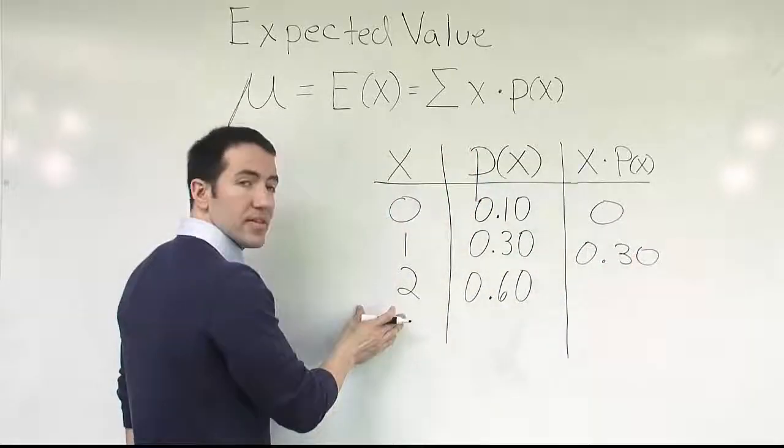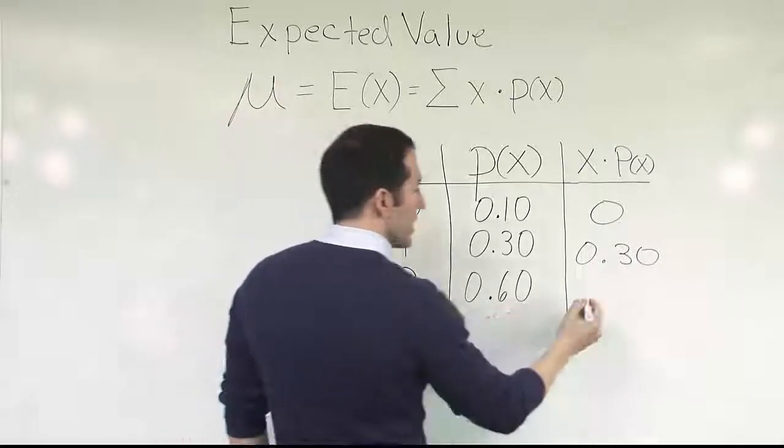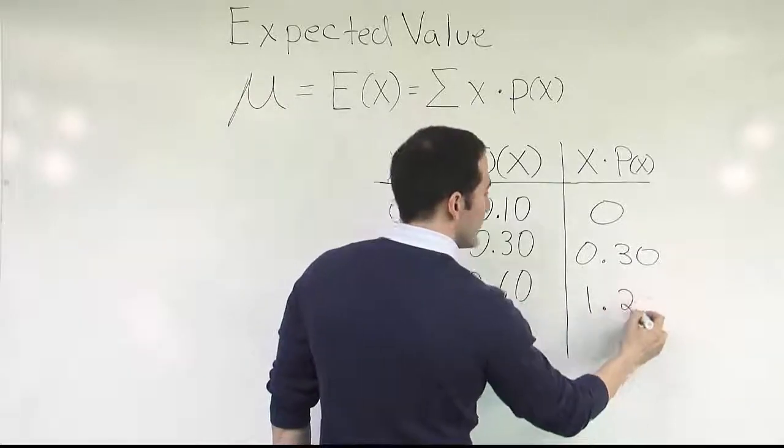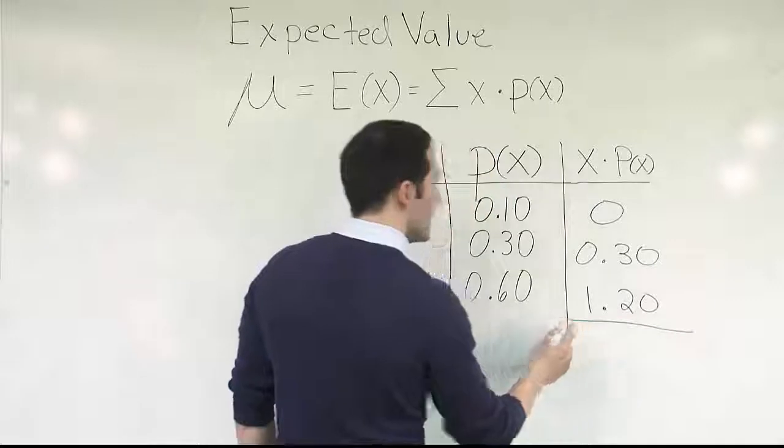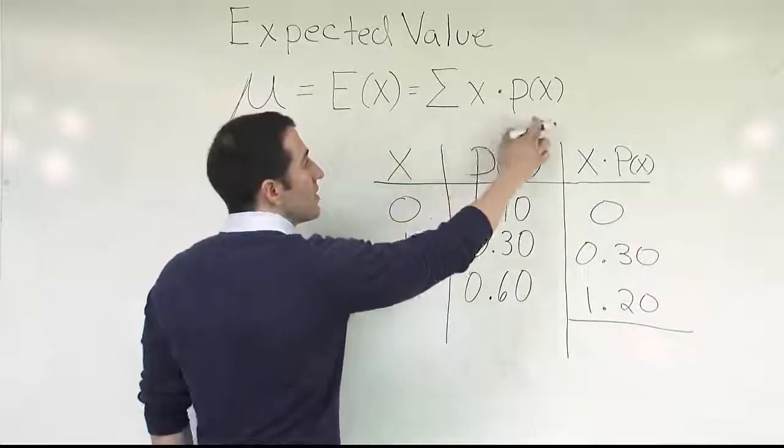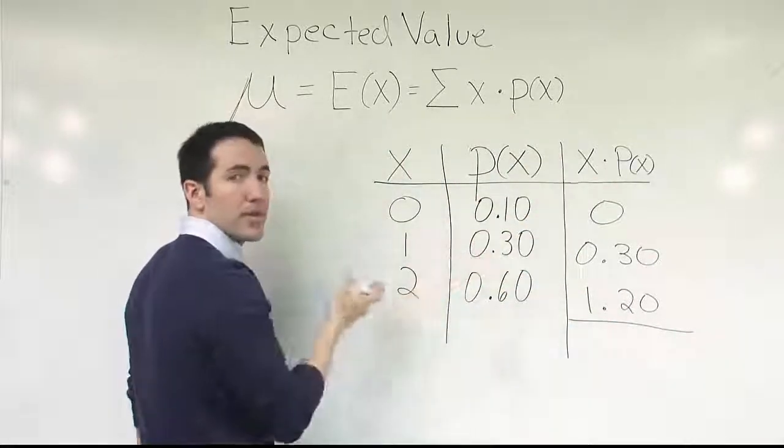And then this last one, 2 times 0.60, that's going to end up giving me 1.20. Okay, so now I've done all my multiplication. So I've calculated the x times p of x for every single row in the table, right?